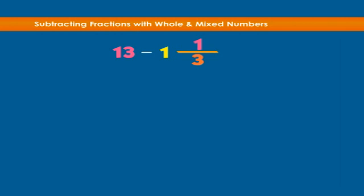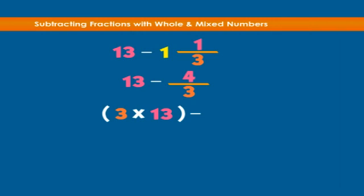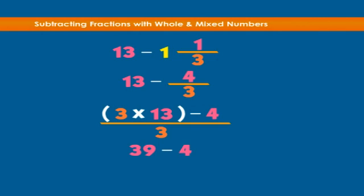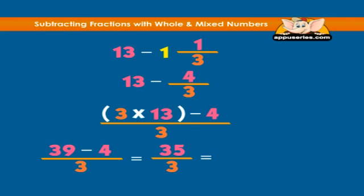Let's look at another example: thirteen minus one and one-third equals how much? One and one-third can be written as an improper fraction: four over three. We have thirteen minus four over three. The LCM is three, so we have three times thirteen minus four over three, which is thirty-nine minus four over three, equals thirty-five over three, and thirty-five over three equals eleven and two-thirds.